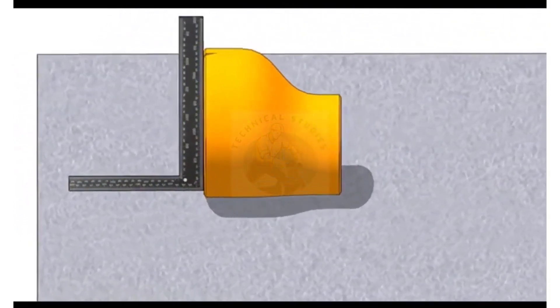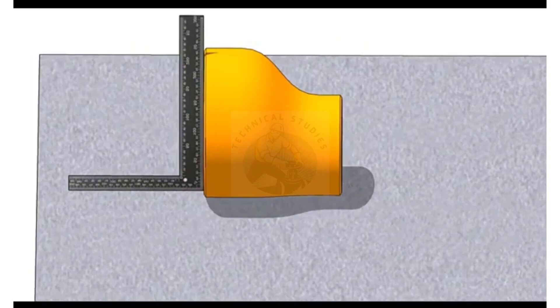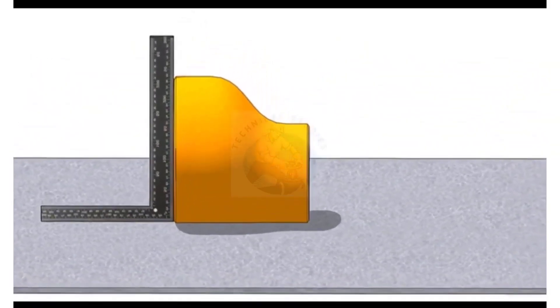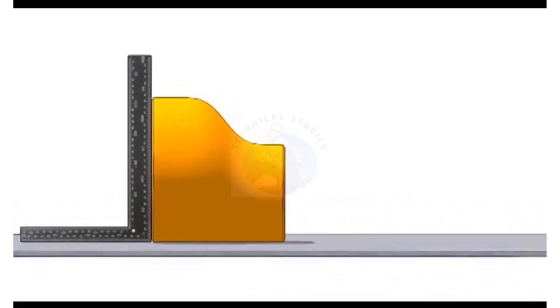Hold a right angle on the large side of the reducer as shown. Roll the reducer back and forth until the face of the reducer touches the right angle properly.